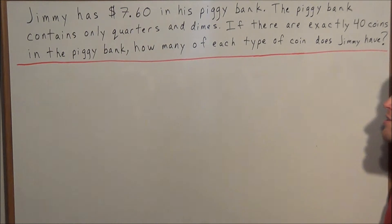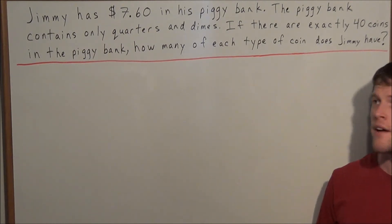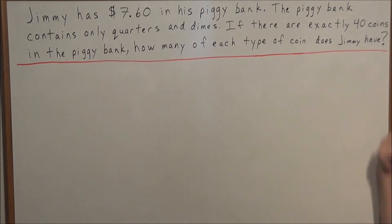So we have the word problem: Jimmy has $7.60 in his piggy bank, the piggy bank contains only quarters and dimes. If there are exactly 40 coins in the piggy bank, how many of each type of coin does Jimmy have?